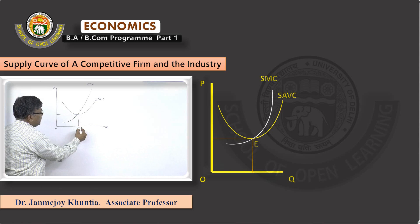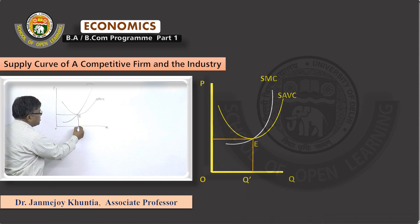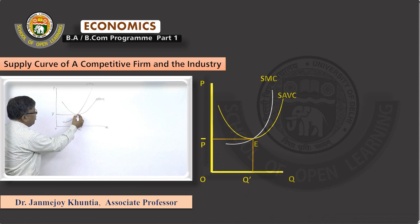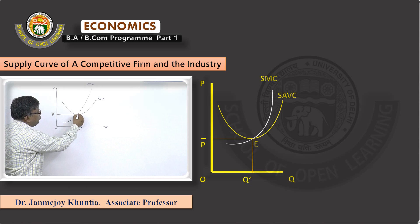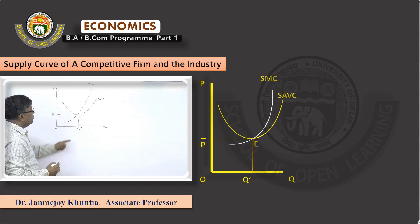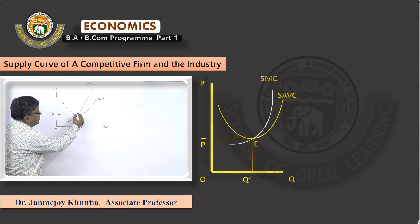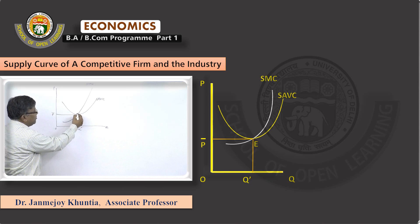Mark this point as E where the marginal cost is cutting the average variable cost. The rate of output Q-dash can be supplied only above the price P-bar, because point E which corresponds to price P-bar is the shutdown point. At this point the firm can only cover its variable cost; below this point it incurs loss and the entire fixed cost is not covered. So no firm will operate below this point.